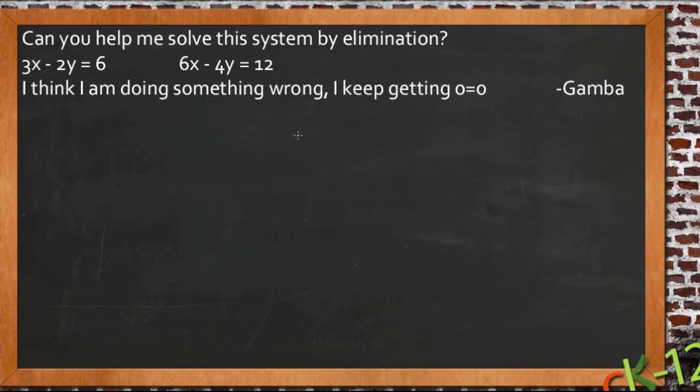Okay, so Gamba sent in a question. He needed a little help solving a system by elimination, and he said he thinks he's doing something wrong because he keeps getting 0 equals 0. And I got that question and realized that that would probably be exactly what we needed for this lesson,